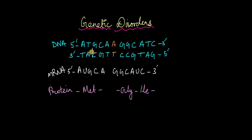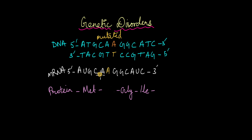The base pair rule says that. So if you were to take this new mutated sequence and make the mRNA from it, this will be the new mRNA sequence, which means that this amino acid here which was initially histidine is going to be changed to glutamine.